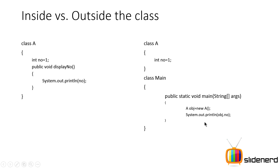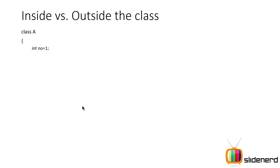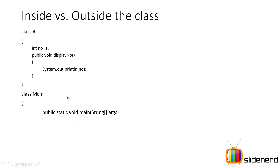Outside the class you always need an object name to refer to a variable, but inside the class you directly refer to the variable without specifying whether it's ob1 or ob2. So what if you do want a name inside the class? Let's say I create a second object ob2 and try to print the number variable of the second object.